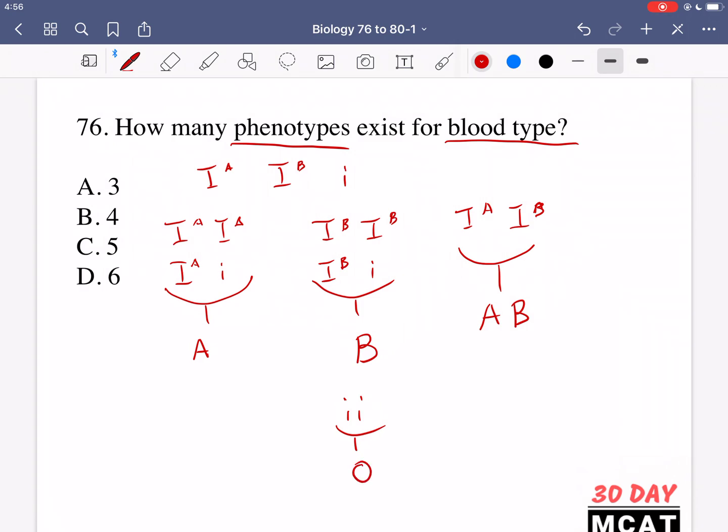Therefore, these are the phenotypes that result from the genotypes. There are four main types.